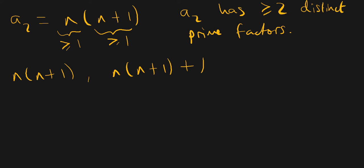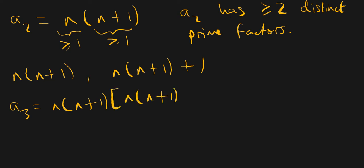Notice that these are also consecutive integers, so the highest common factor is also one. If I define a3 to be the product of these two numbers — so a3 equals n times n plus one, times n times n plus one plus one — then we've just seen that n times n plus one, which is a2, has at least two distinct prime factors. So n times n plus one is going to contribute at least two distinct prime factors.